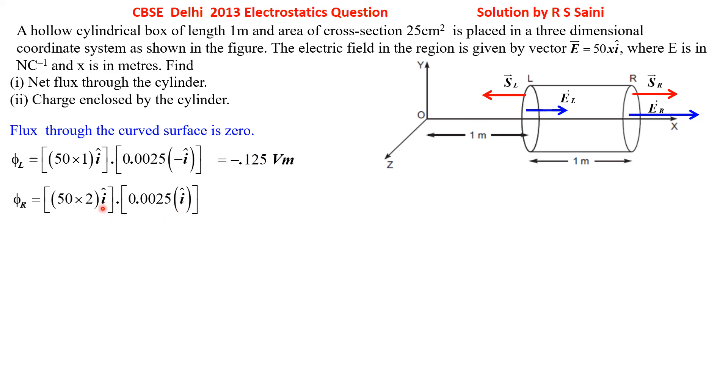That means answer is going to be positive. Simply add these two, you would get the net flux. First part is over. Net electric flux through the cylinder is 0.125 volt meter.